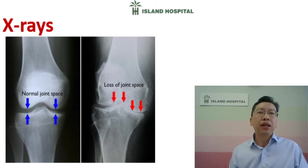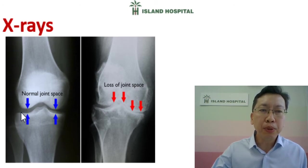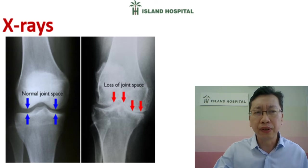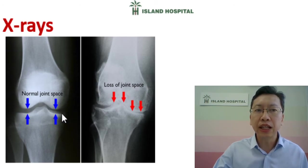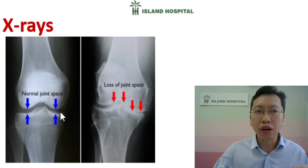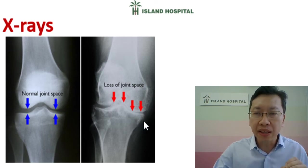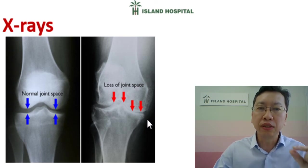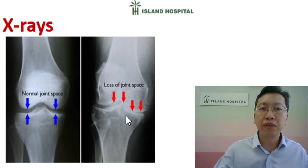Looking at the X-ray, the X-ray on your left is a normal-looking X-ray. There will be a space in between the bones, which represents the thickness of our cartilage — we can't see cartilage on X-ray, only bone. But in an osteoarthritis patient, this space gets reduced or narrowed, as seen in the X-ray on your right. This explains why you have pain when walking with osteoarthritis, because the cushion cartilage has thinned out. We can also see bone spurs protruding out from the bone.